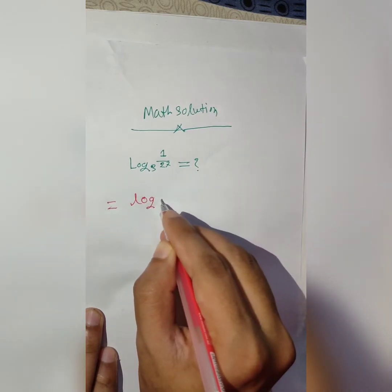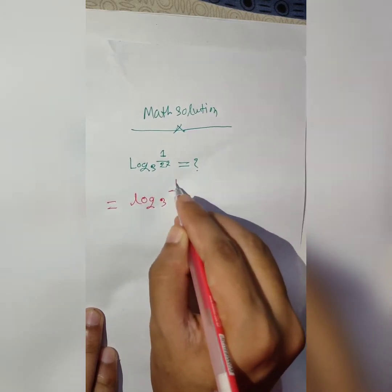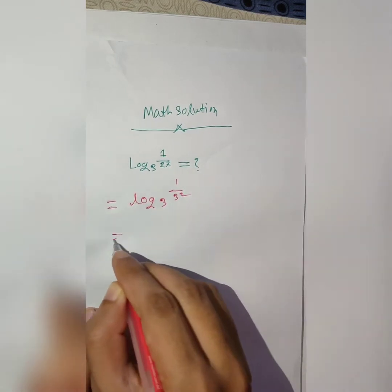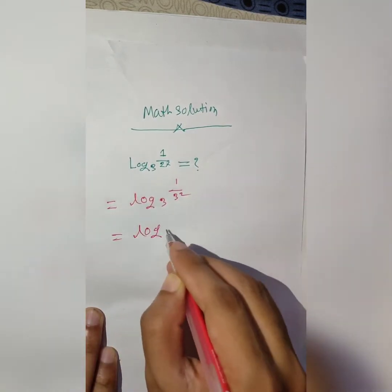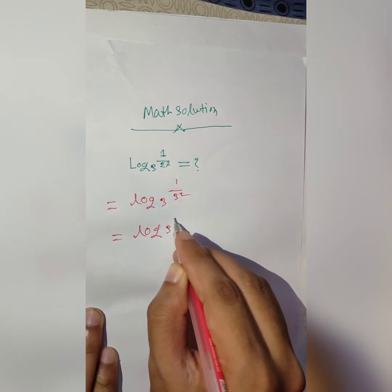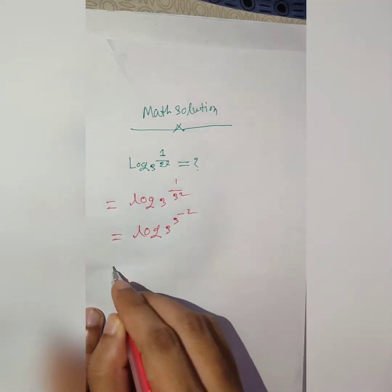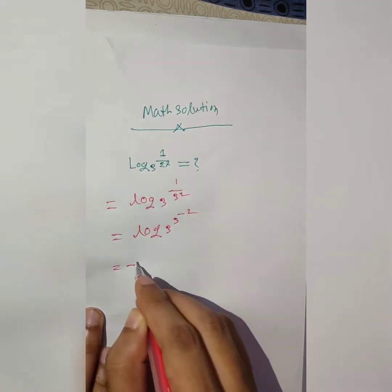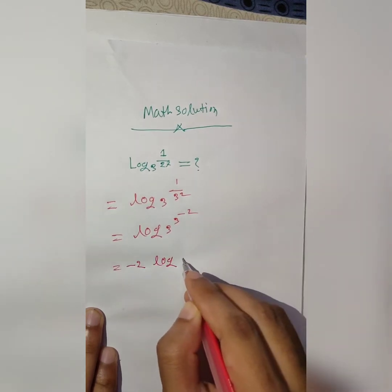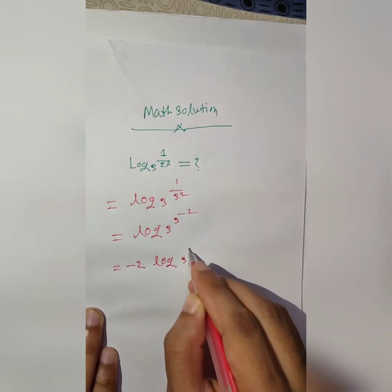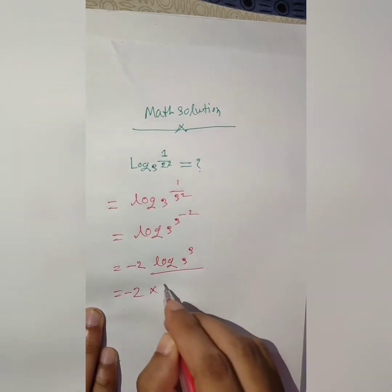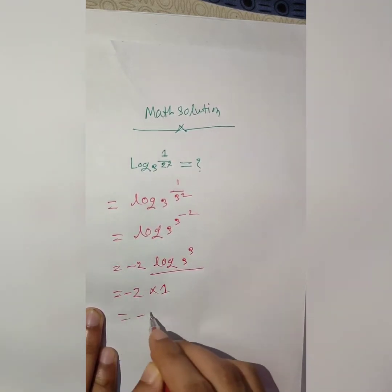log₃(3²), log₃(3^(3-2)), equal to 1 minus 2.